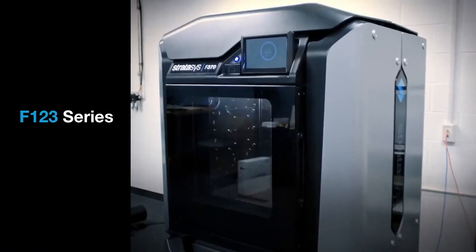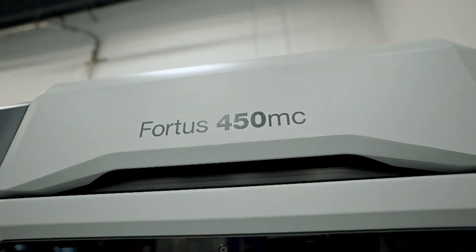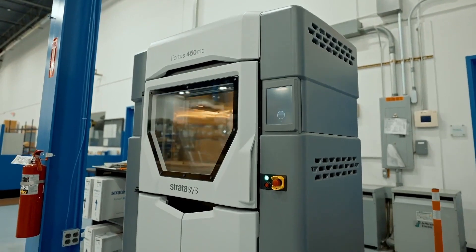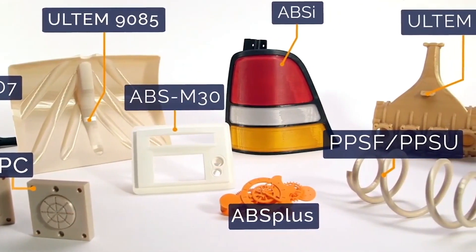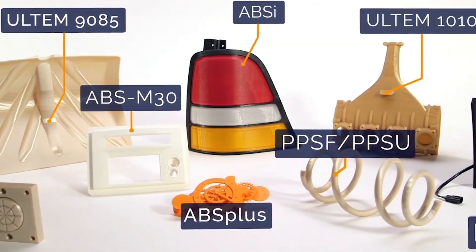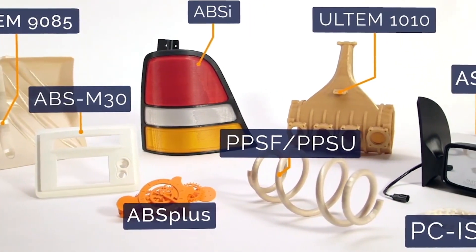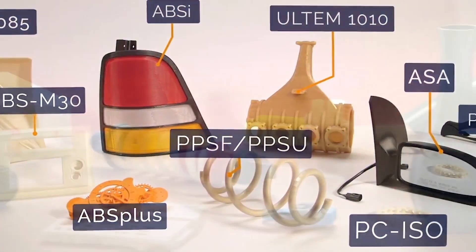Stratasys FDM printers are best-in-class industrial-grade systems with filament capabilities that stretch from everyday materials like ABS and polycarbonate to high-performance thermoplastics such as carbon-filled nylon and aerospace-grade Ultem.